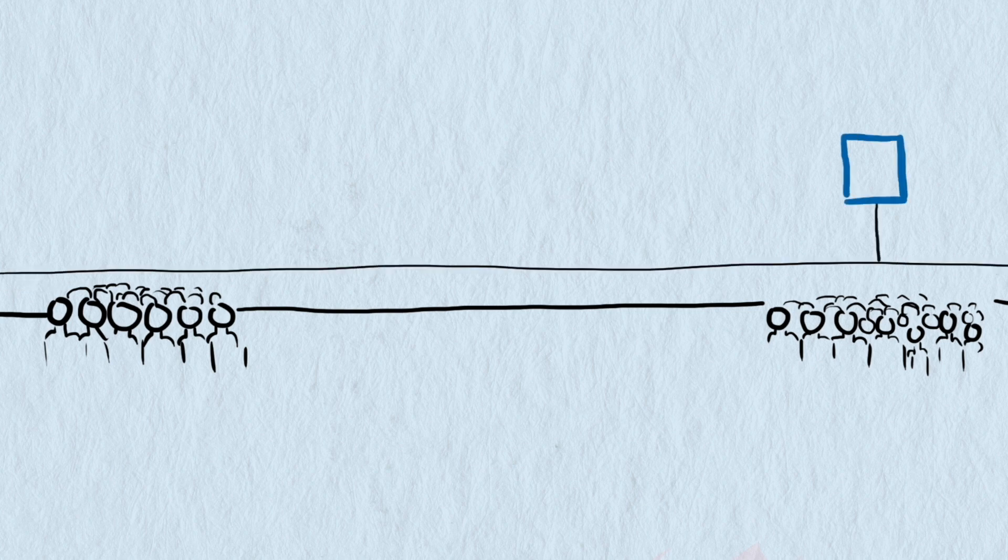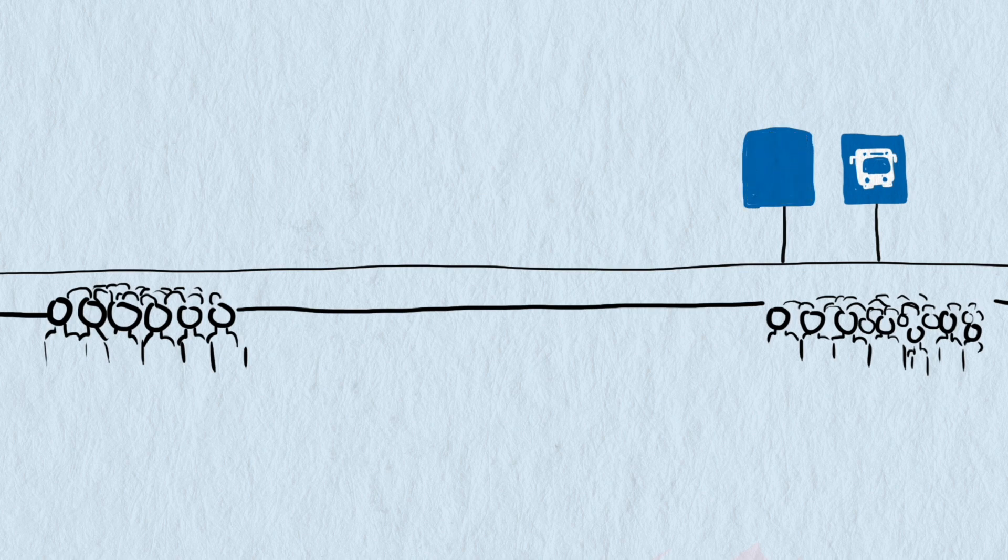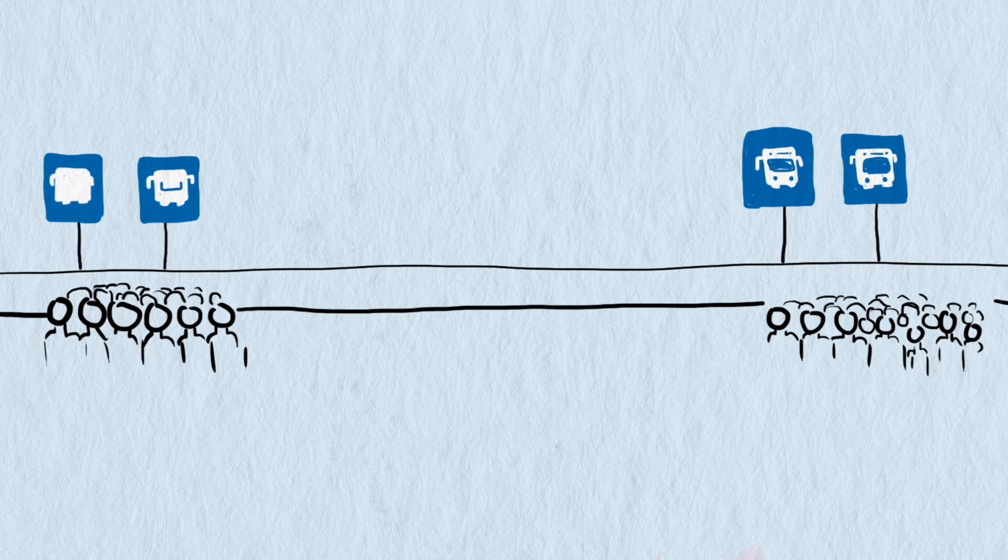For any particular bus route there are places where some people might not want to go on a route and other places like a theater or shopping center that would be a popular place to go. So it wouldn't make sense to put a stop in some locations and more sense to put a stop near others but just to get started I'm going to assume that any spot on the path is just as likely for people to go as any other.